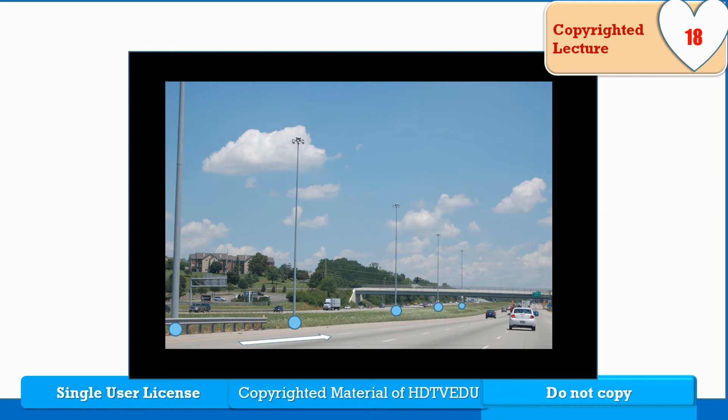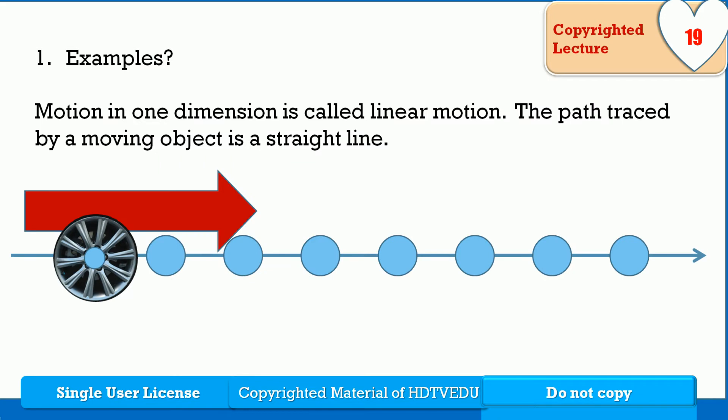To the east, to the west, north, south, straight line, up and down. Those are all linear motion. Motion in one dimension is called linear motion. The path traced by a moving object is a straight line.